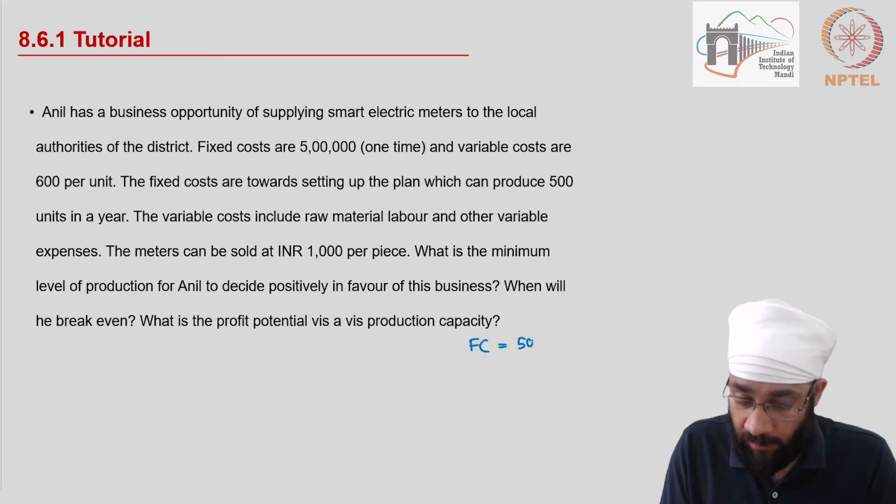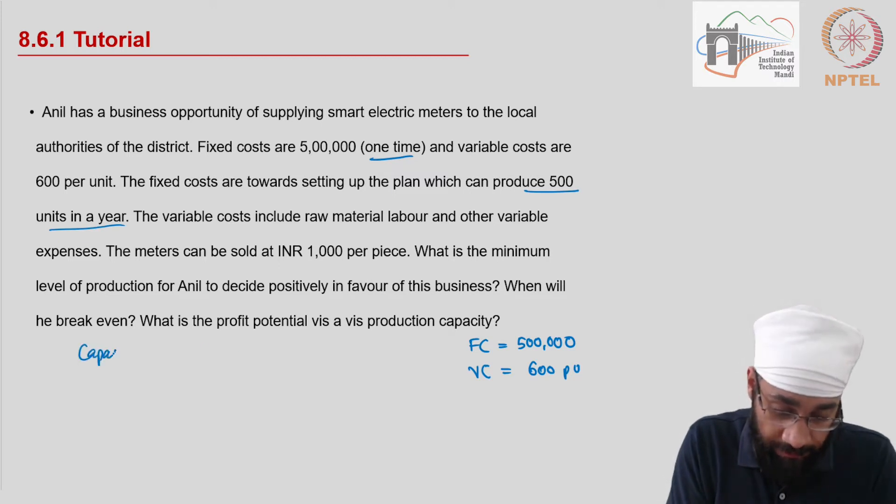The fixed cost is 500,000 which is one time. The variable cost per unit is 600 per unit. The fixed costs are towards setting up the plant which produces. The capacity is given to you. Let me write it here: capacity is 500 units per year. The variable cost includes raw material content.